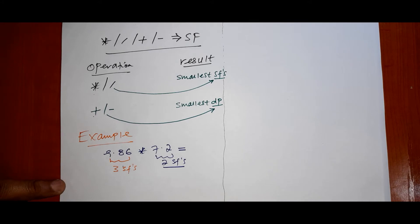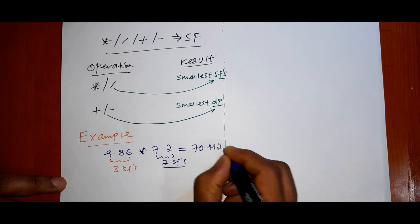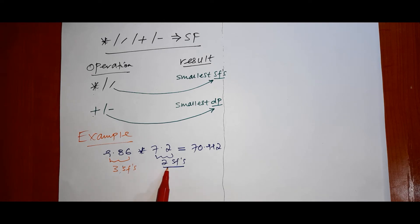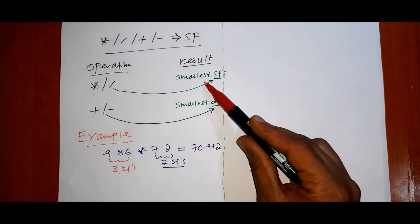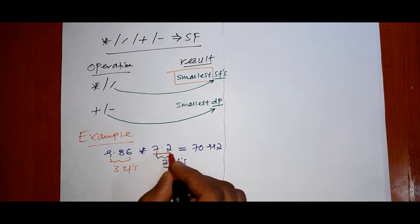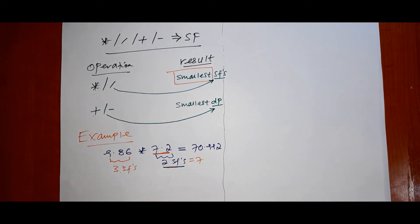The calculator gives a result of 70.992. Now we apply the significant figures rule. The smallest number of significant figures among the factors is from 7.2, which has two significant figures. So the result should be rounded to two significant figures.